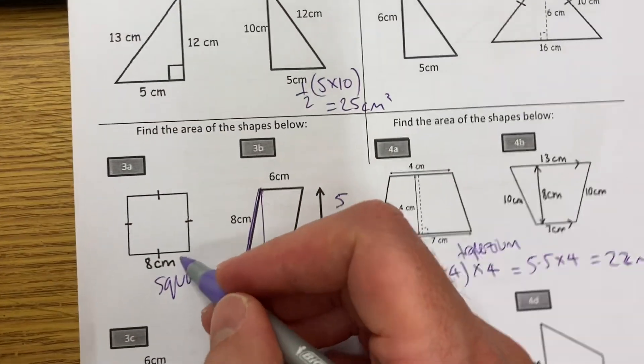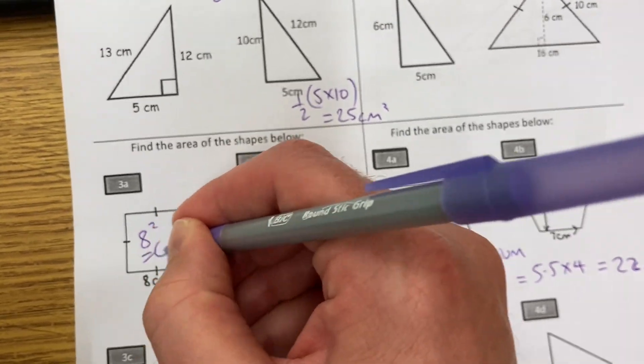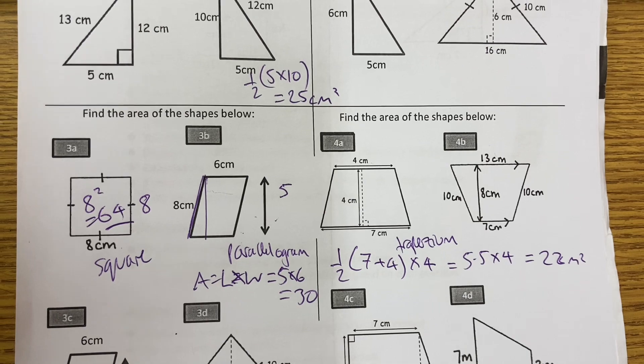The last one, square. This should be straightforward. 8 times 8, it's 8 squared, it's 64. Which is why 64 is a square number, because it makes a square.